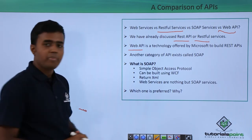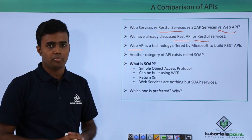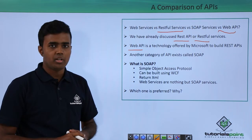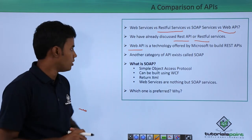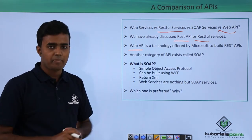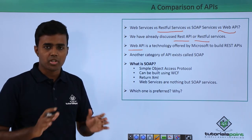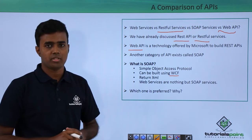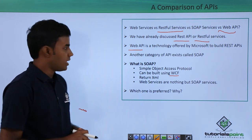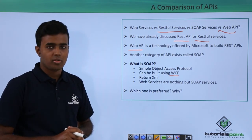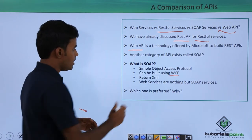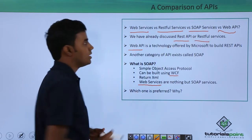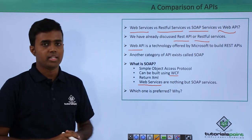Another category of APIs exists called SOAP. SOAP stands for Simple Object Access Protocol. SOAP can be built using the Microsoft technology called WCF, or Windows Communication Foundation. Unlike REST, SOAP returns only XML. And Web Services are nothing but your SOAP Services, and they can be used interchangeably.